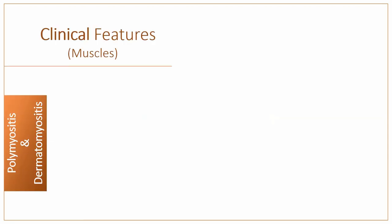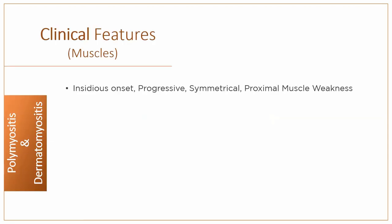Coming on to clinical features. There is an insidious onset of progressive, symmetrical, proximal muscle weakness, usually affecting the lower limbs more than the upper. Patients report difficulty rising from a chair, climbing stairs and lifting, often — though not always — with muscle pain.